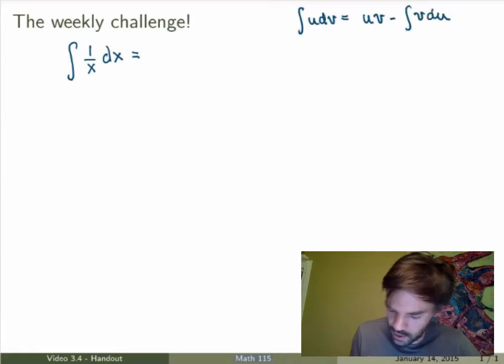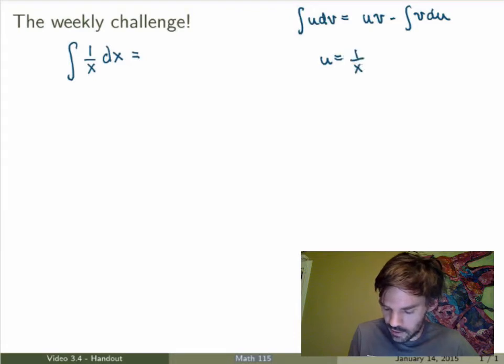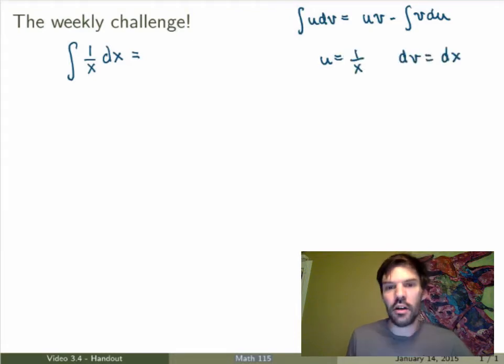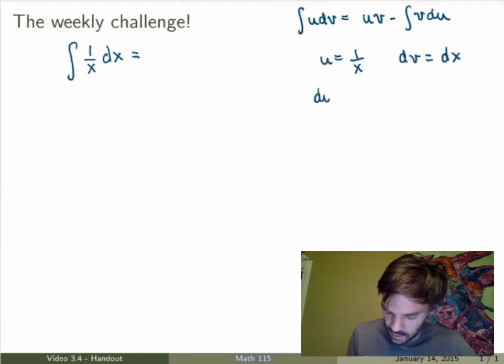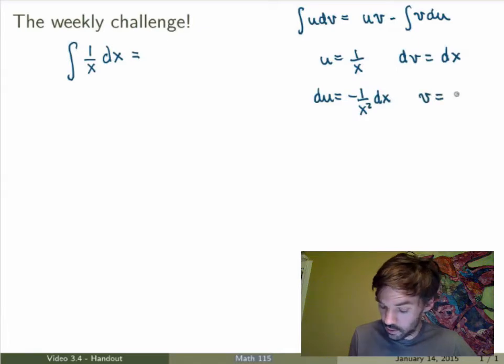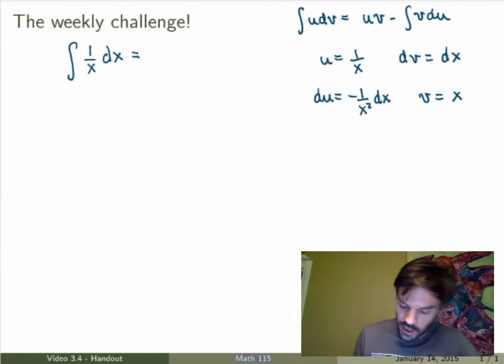Now I'm going to pick my functions. I'm going to choose u to be equal to 1/x and dv to be simply dx. Alright, now if I do that, then du is equal to minus 1 over x squared dx, and v is the integral of dx, which is just x. And I can substitute that on the right hand side to evaluate by integration by parts.